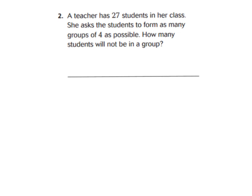Okay boys and girls, we are going to start with number 2 in your GoMath book. We're going to be jumping around a lot in this lesson, so put a star next to the questions we work out together — put a star next to question number 2. It says: a teacher has 27 students in her class. She asks the students to form as many groups of 4 as possible. How many students will not be in a group? This is a division problem: 27 students divided into groups of 4.